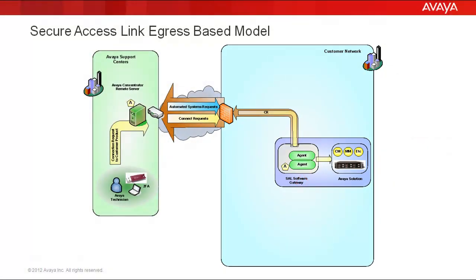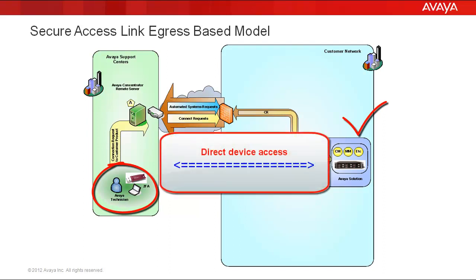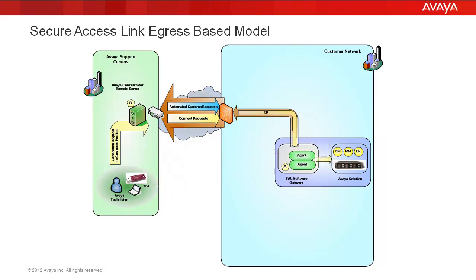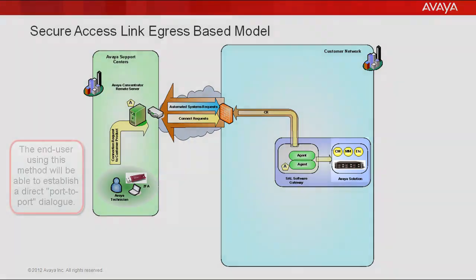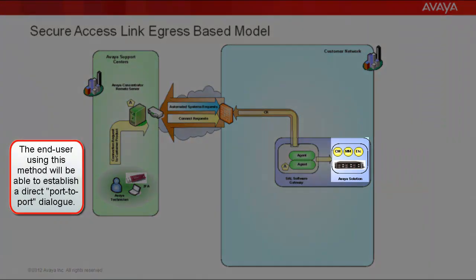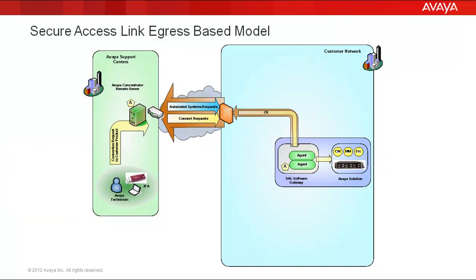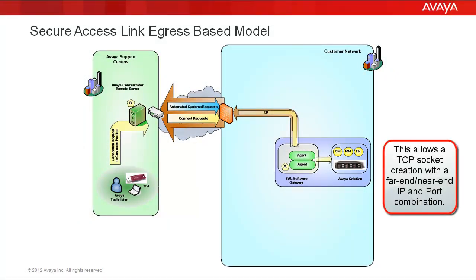Before we can understand how this model works, it's important to understand how a traditional connectivity solution works. In most instances, a user needing to connect to a given device will have some form of direct access to a particular device, whether that's through a modem connection or a VPN solution with NAT in place. In either case, the end user will be able to establish a direct or indirect port-to-port dialog with that end device.